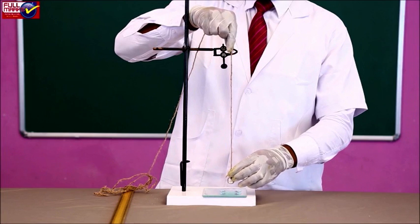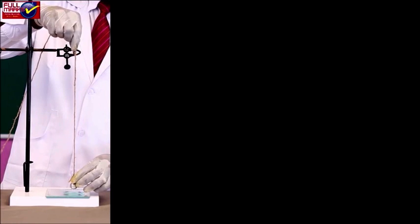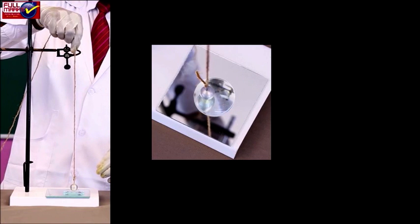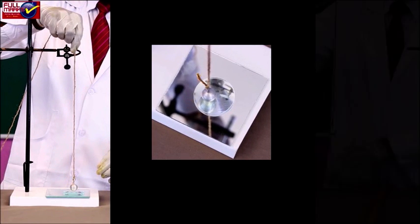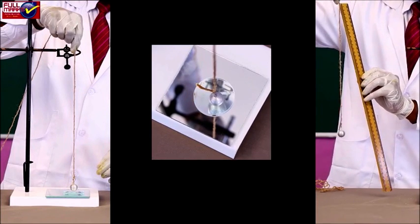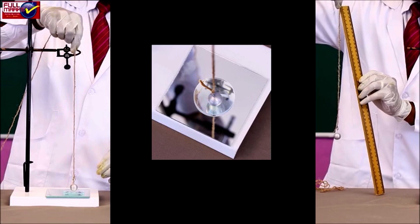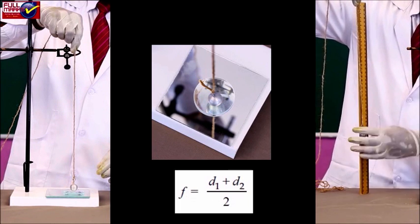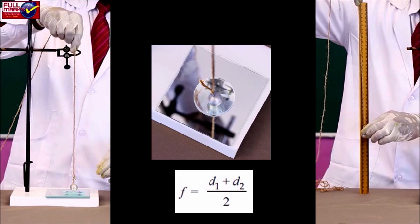Note down the distance between the upper surface of lens and tip of a needle using a plumb line and meter scale and take this as D1. Note down the distance between plane mirror and tip of the needle and take this as D2. The mean of two readings would give the value of focal length of convex lens, i.e., F is equal to (D1 plus D2) by 2.